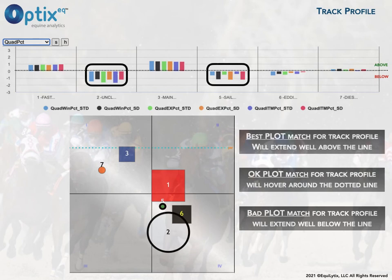So that's a quick look at track profile, and that concludes our introductory series on Optics Plot. There are other videos coming, and other videos already there, that show you how to tile this information together and use it to actually handicap races. Check those out, and also check out our website at OpticsEQ.com or on Twitter at OpticsEQ.